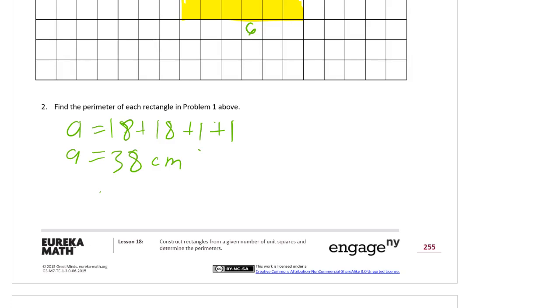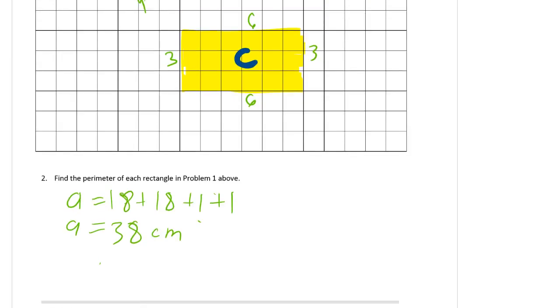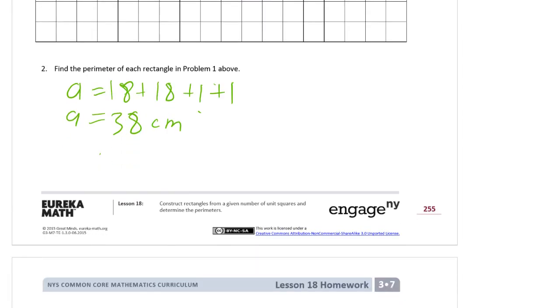Yep, those are square centimeters. So the perimeter is gonna be in regular centimeters, not square centimeters. Because square centimeters is counting squares. We're not counting squares. We're counting, like on this rectangle here, we're counting sides of squares. 1, 2, 3, 4, 5, 6. And those are 1 centimeter square, so each side is 1 centimeter. 6 centimeters. It's just centimeters for perimeter.